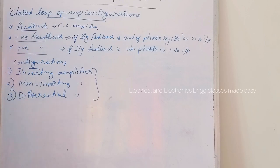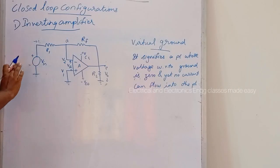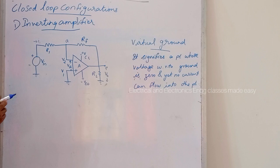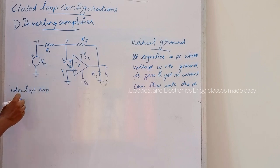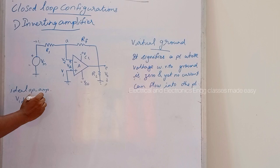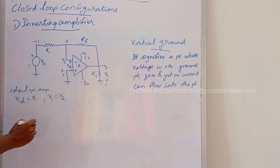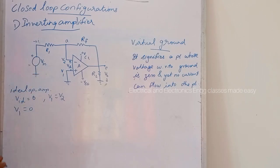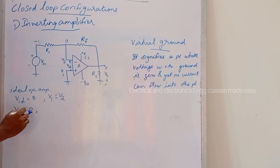Let us discuss these three configurations in detail. First, the inverting amplifier. This is the circuit diagram for the inverting amplifier. Assume ideal op-amp. For an ideal op-amp, VID, the differential input voltage, is zero. When VID equals zero, V1 equals V2. Here V1 is zero, so V1 is equal to zero.